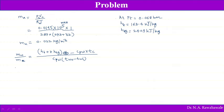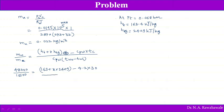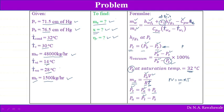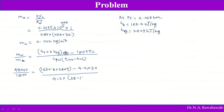Substituting: MW/MC = 48,000/1500 = [163.4 + X·2409 − 4.2×30] / [4.2×(28 − 14)]. Solving this equation gives dryness fraction X = 0.765.